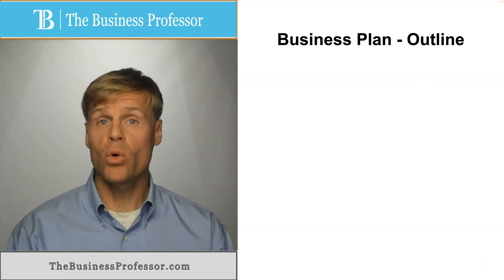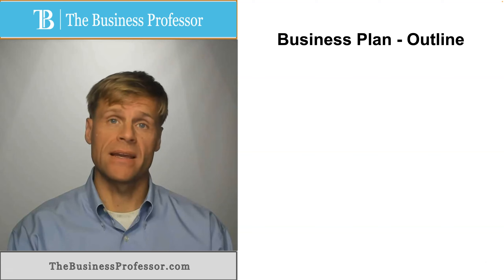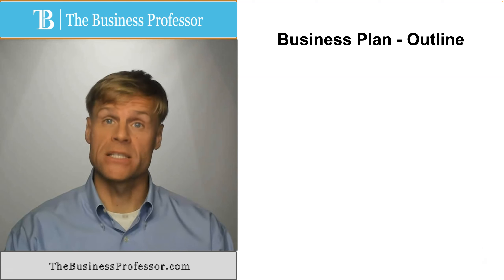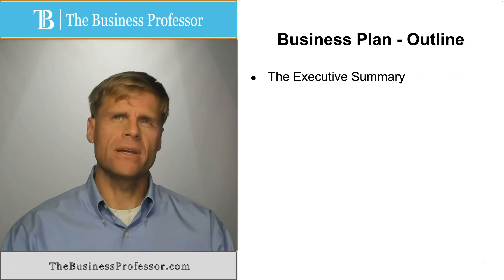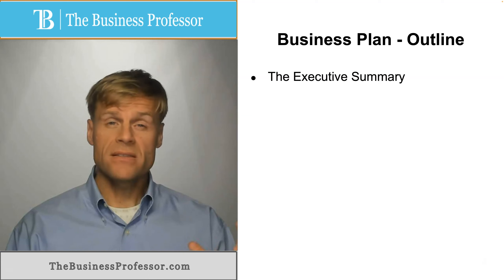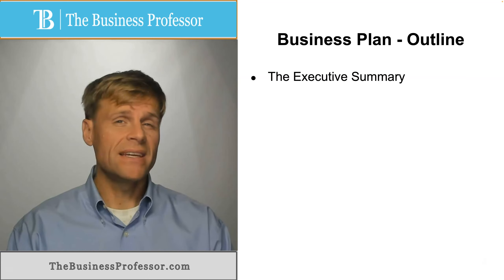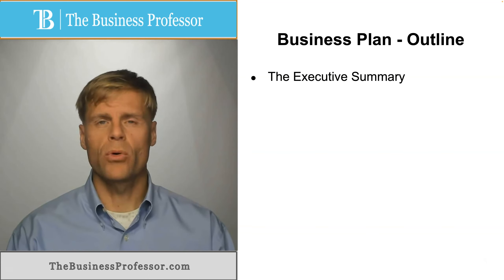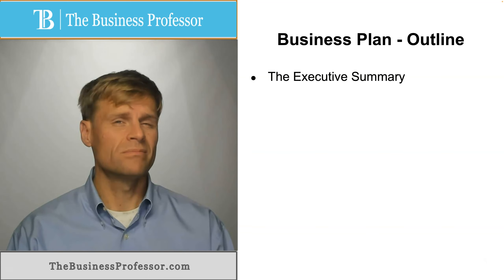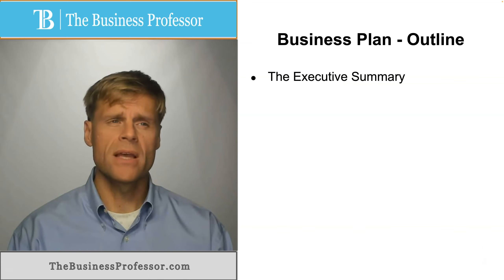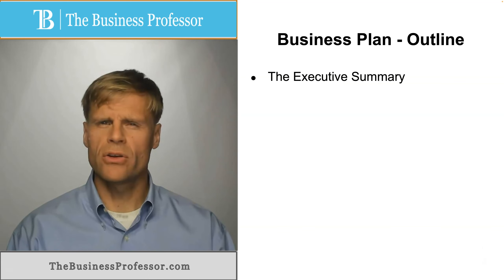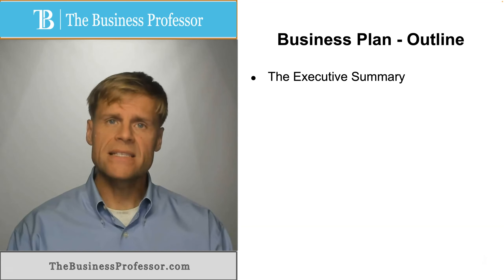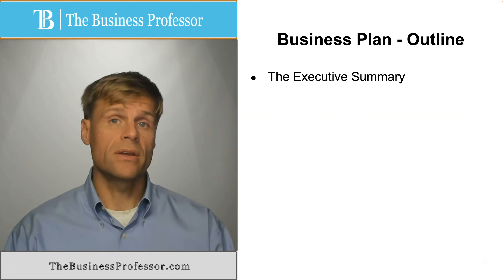What are the key components of a business plan, or restated, what is a solid outline for a business plan? To begin with, you're going to start with an executive summary. This is a general summary of the entire plan. So if someone only had the ability to read a very small portion — one or two paragraphs — to learn as much as they could about the business overall, this is the executive summary and this is how you're going to start the business plan.